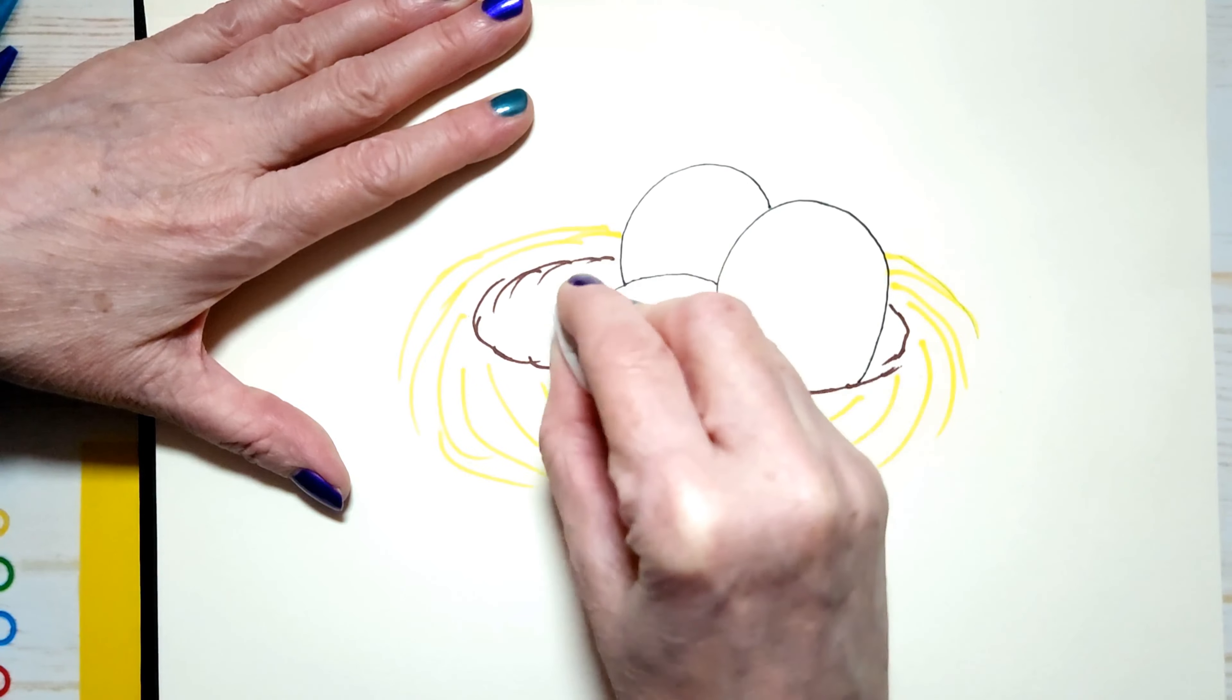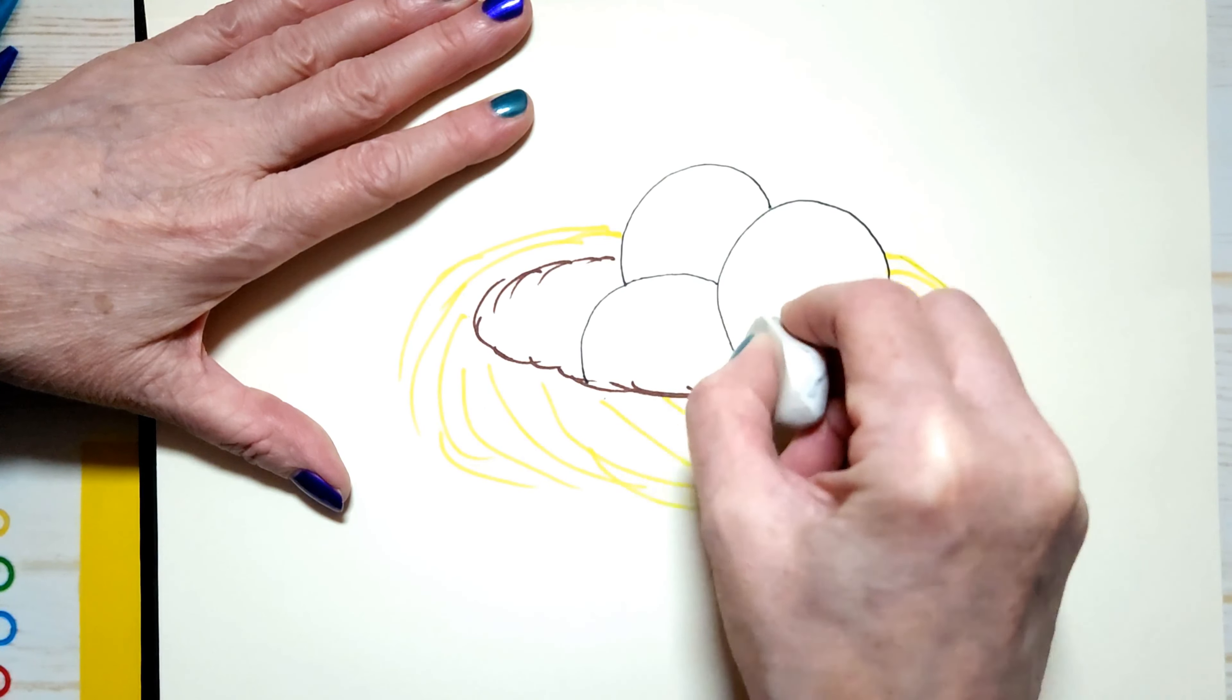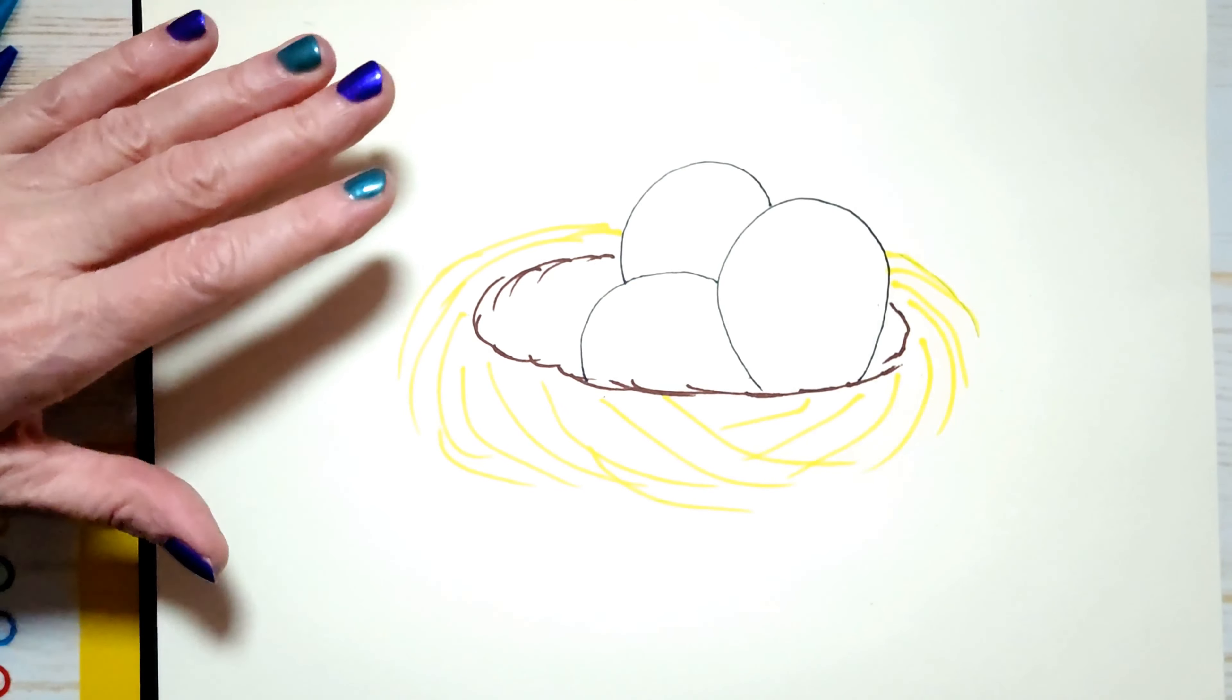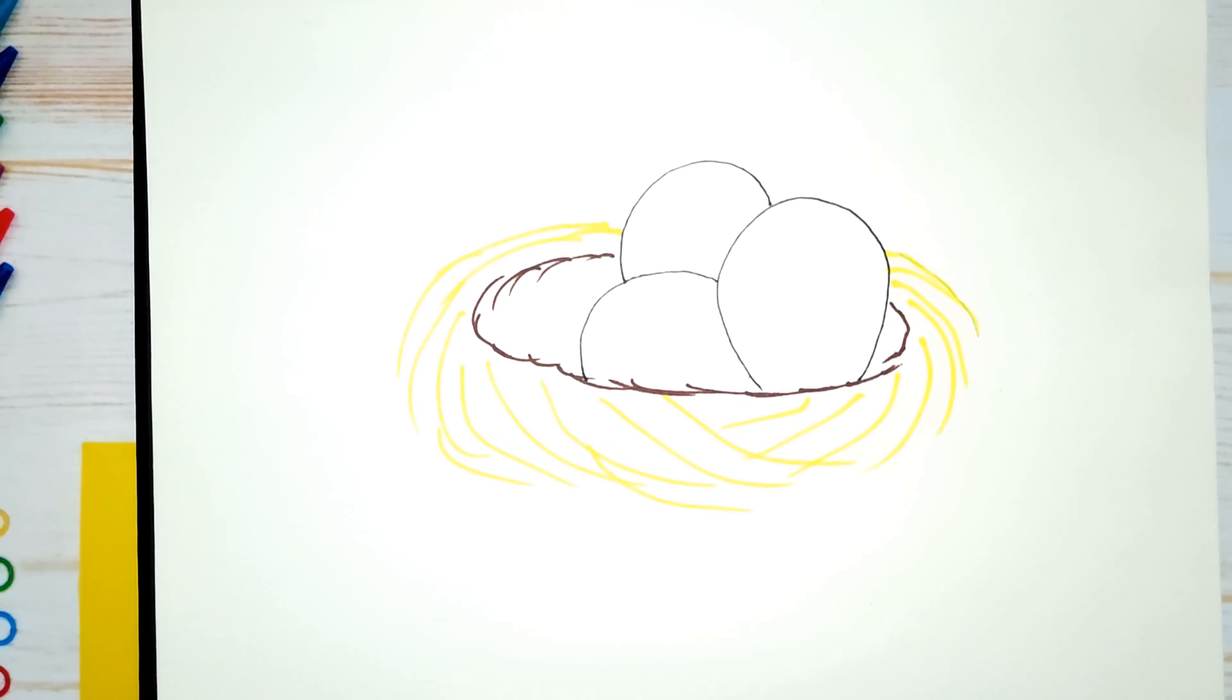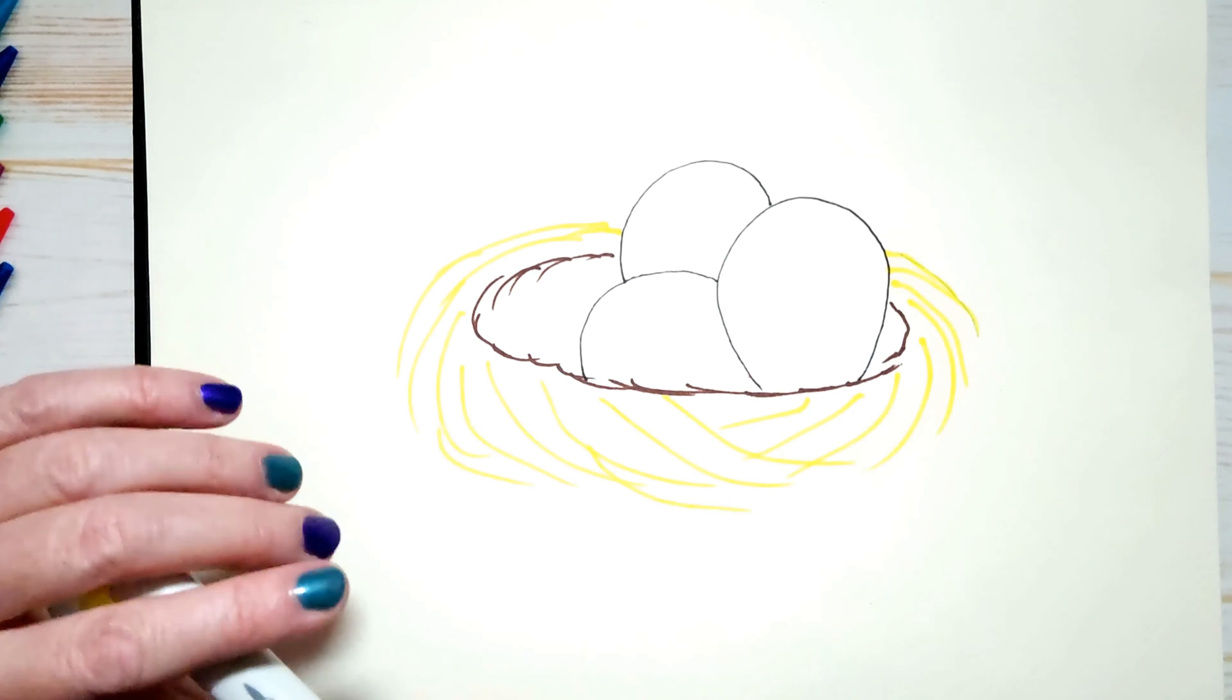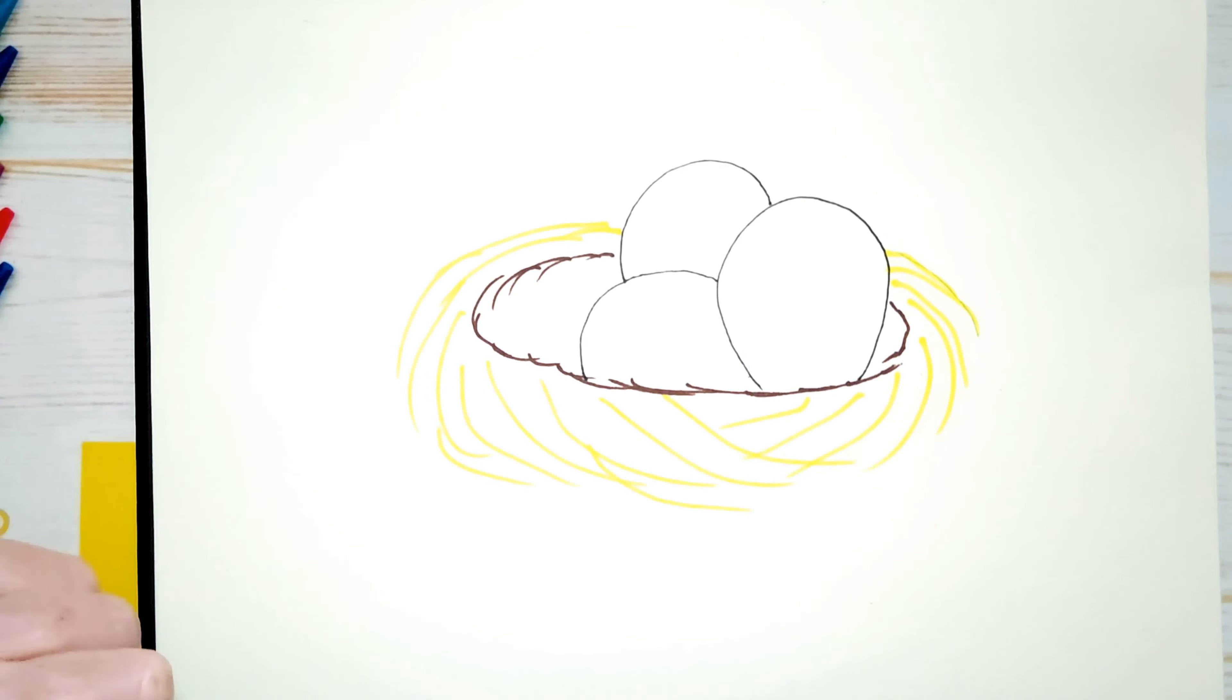So I'm not even worried about erasing right now. And this is optional. You don't have to erase your pencil marks if you feel like you've covered them and they're not showing. Then that's fine. So I think we can put our pencil and eraser away and we can start by coloring in the eggs with our blue color.